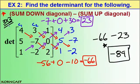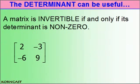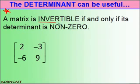Please take time to fully understand how to do a 3x3 matrix. Now you're probably asking yourself, what is this good for? Quite simply, the determinant determines if a matrix has an inverse or not. Please jot down this part of the definition: a matrix is invertible if and only if its determinant is non-zero. Invertible means it has an inverse, and non-zero means the determinant doesn't equal zero.